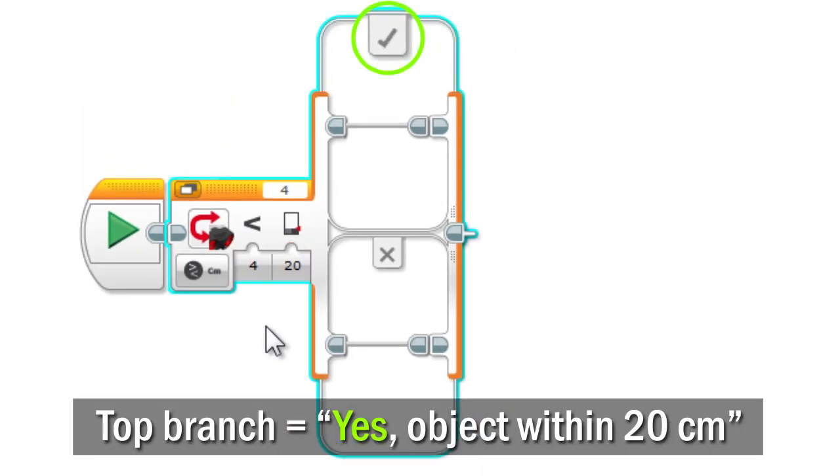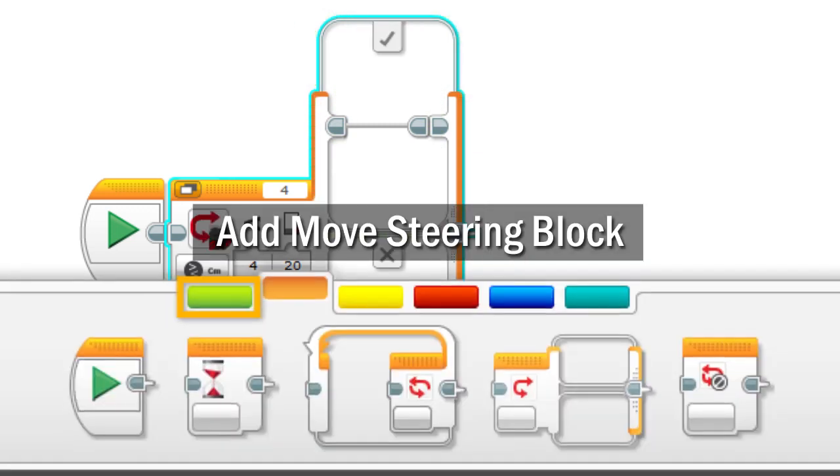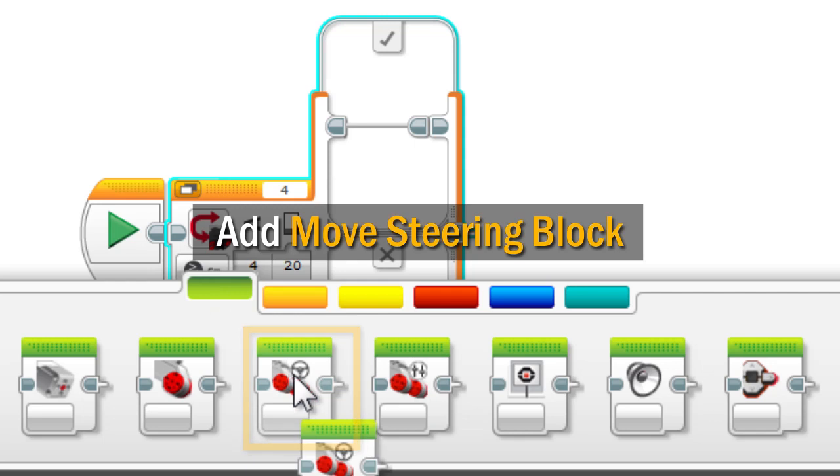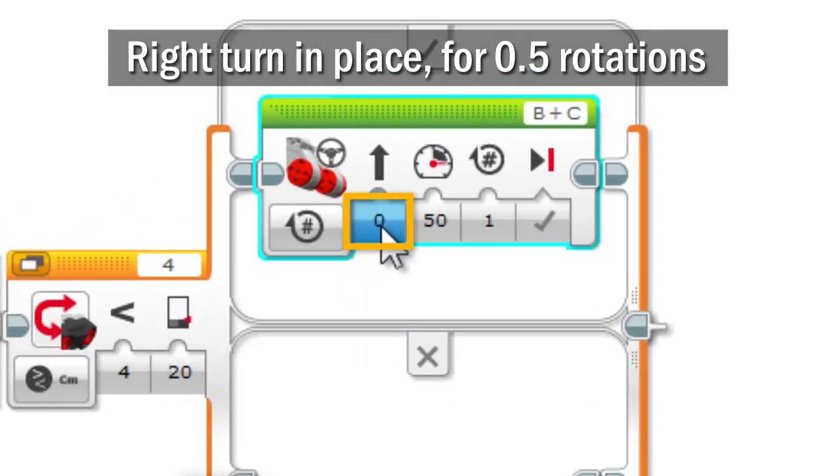In the top branch, meaning yes there is an object within 20 centimeters, place a move steering block set to make a right turn in place for 0.5 rotations, which turns the robot about 90 degrees.